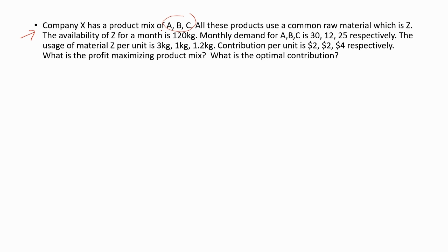The monthly demand for products A, B, and C is 30, 12, and 25 units respectively. The usage of material Z per unit is 3 kg, 1 kg, and 1.2 kg respectively. The contribution per unit is $2, $2, and $4 respectively.